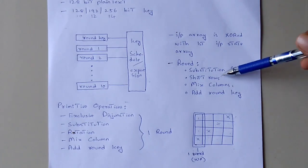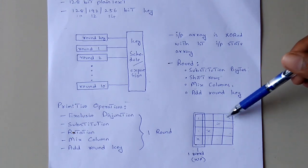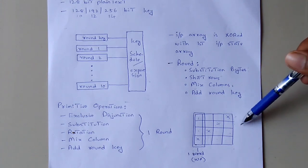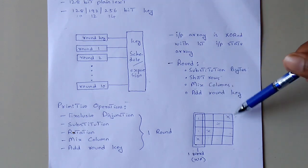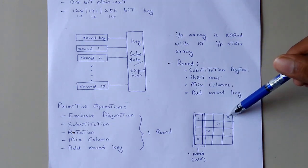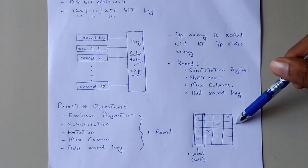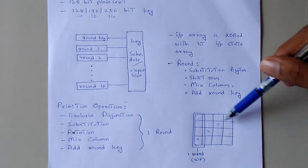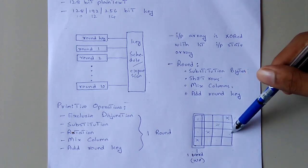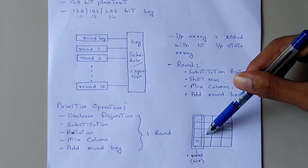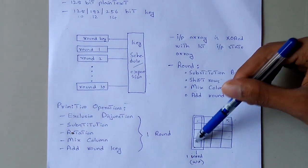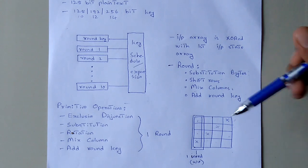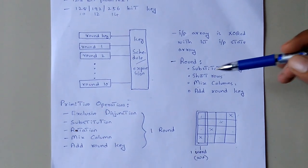Next, we have ShiftRows. In ShiftRows, rows are left-shifted by varying amounts: the 1st row is not shifted, the 2nd row is left-shifted by 1, the 3rd row is left-shifted by 2, and the 4th row is left-shifted by 3. That is the ShiftRows transformation.